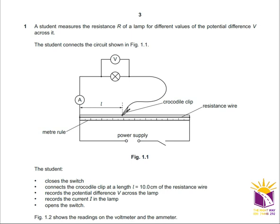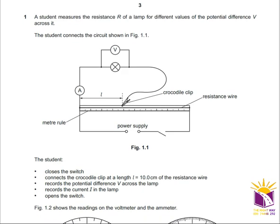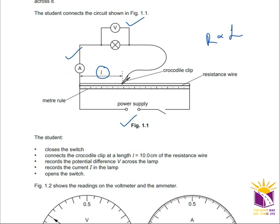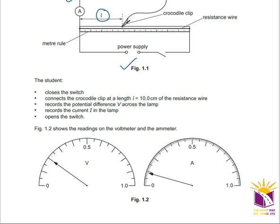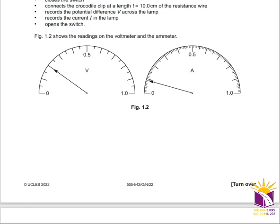Question one: a student measures the resistance R of a lamp for different values of the potential difference V across it. The student connects the circuit as shown in figure 1.1 — a voltmeter and ammeter are connected along with a power supply and a crocodile clip. When the length of the crocodile clip changes, the resistance of the wire changes, since R is directly proportional to length.